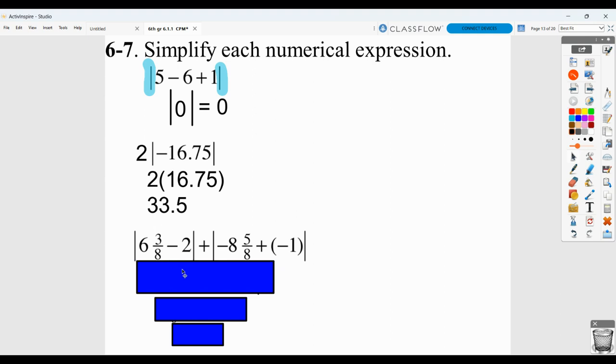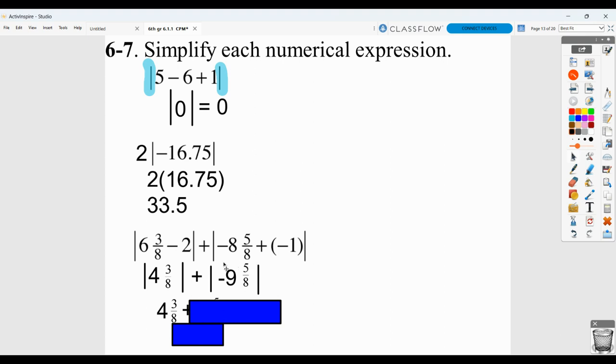Here, six and three-eighths minus two would be four and three-eighths. And then negative eight and five-eighths plus negative one would be negative nine and five-eighths. Again, notice that I haven't taken them out of the absolute value bars yet, but absolute value of four and three-eighths is four and three-eighths. Absolute value of negative nine and five-eighths is positive nine and five-eighths. Combining them, we get 14.